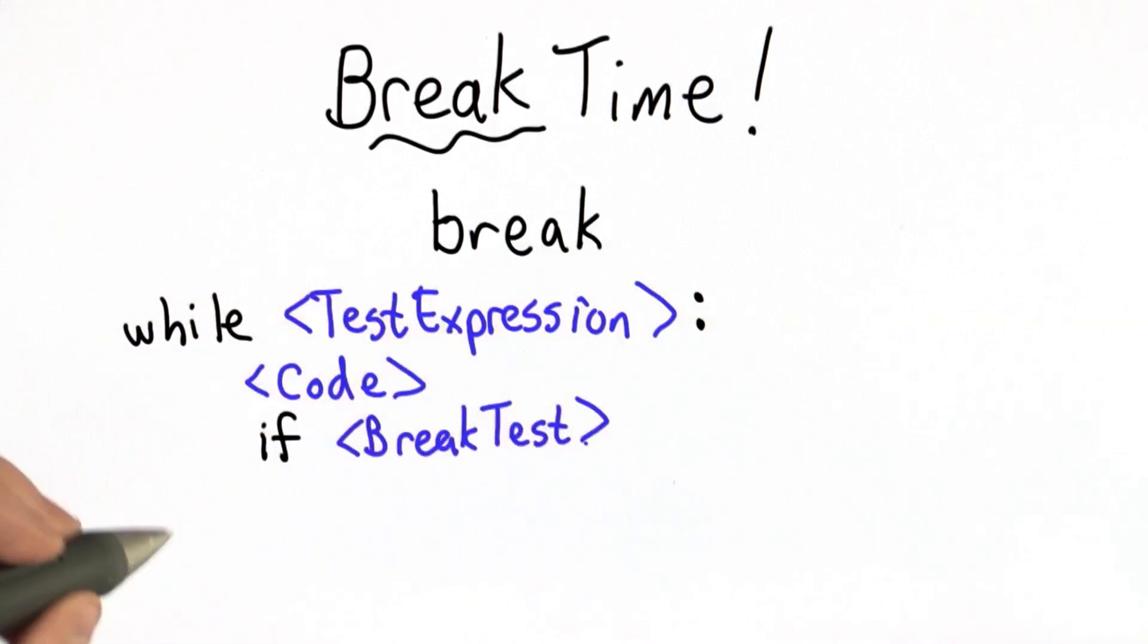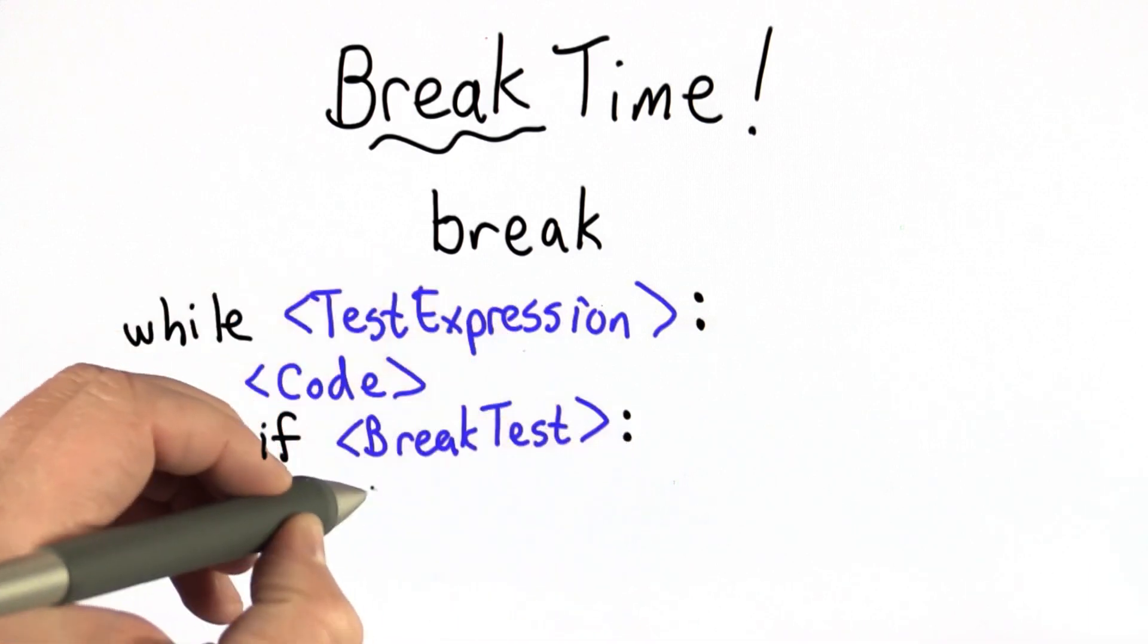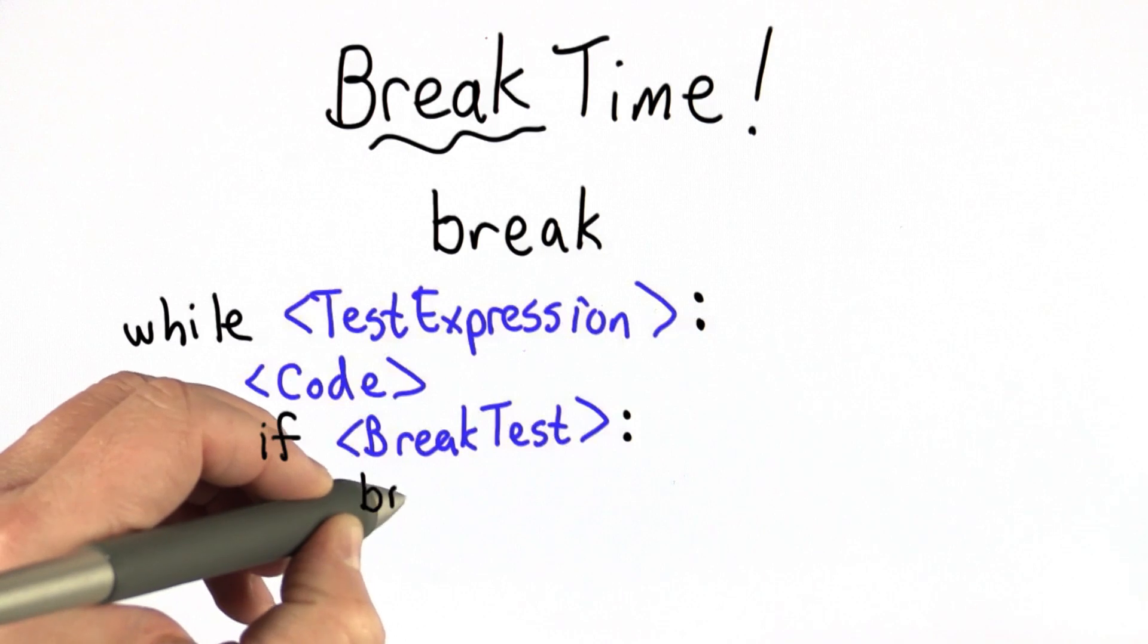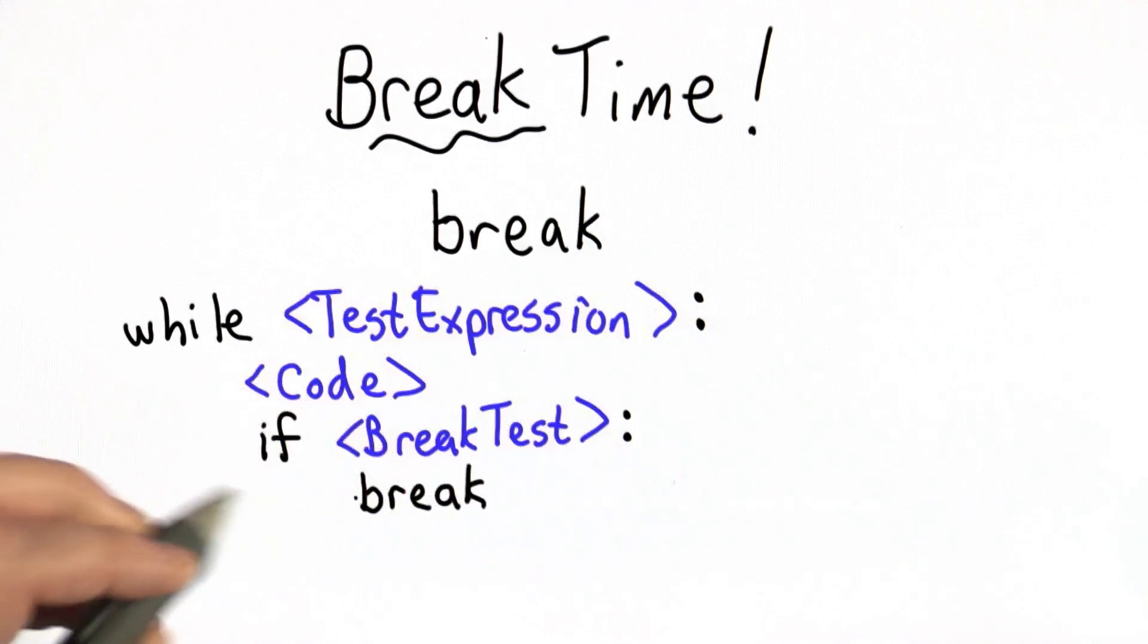We'll call that the break test. That's a test expression that's checking whether it's time to take a break. When the break test is true, what we have is break, which by itself is all we need. What break means is stop executing the while loop, jump out of the while loop, and continue with the code after that.